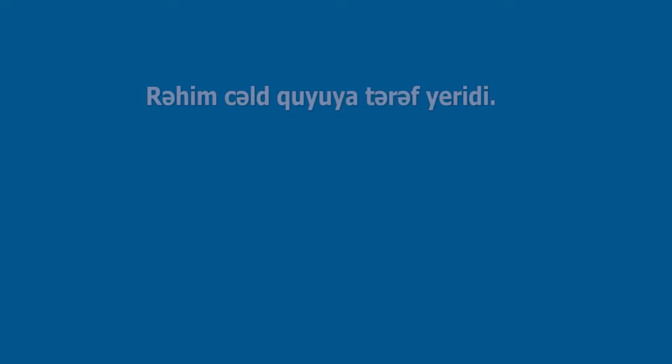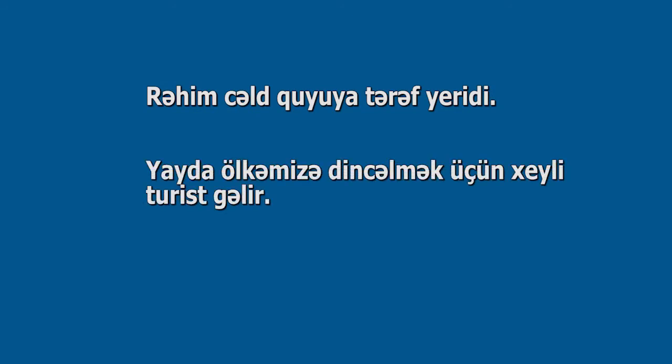Zərflik. Zərflik hərəkətin icrasını və əlamətin meydana çıxmasını müxtəlif cəhətlərdən izah edir. Zərflik hərəkətin tərzini, zamanını, yerini, miqdarını, səbəbini, məqsədini bildirir. Nümunələr: Rəhim cəld quyuya tərəf yeridir. Yayda ölkəmizə dincəlmək üçün xeyli turist gəlir. Zərflik əsasən feyli xəbərə, bəzən də ismi xəbərə aid olur.